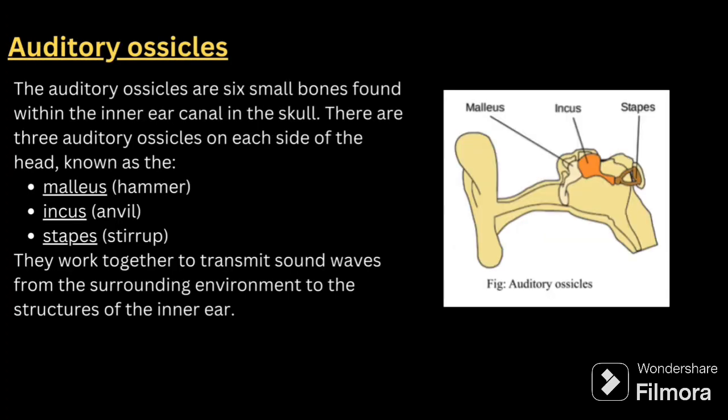Next come the auditory ossicles. These are six small bones found within the inner ear canal. There are three auditory ossicles on each side of the head, known as the malleus, incus, and stapes. The malleus is hammer-shaped, the incus is anvil-shaped, and the stapes is stirrup-shaped. They work together to transmit sound waves from the surrounding environment to the structures of the inner ear.